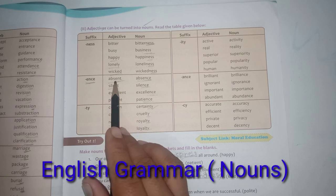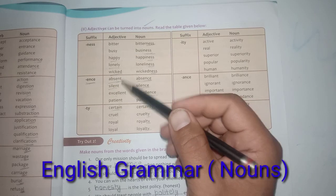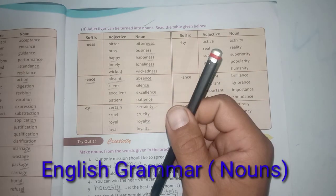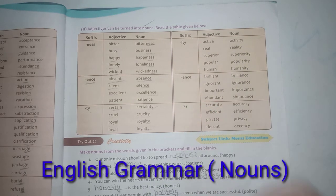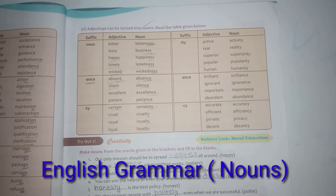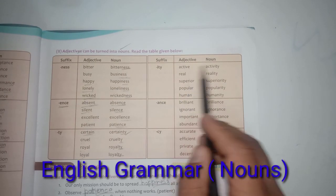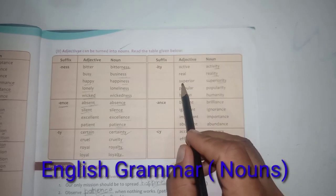For example, saying 'you are a very cruel person' — cruelty is the noun form showing that characteristic. Adding -ity: active → activity, real → reality, superior → superiority, popular → popularity, human → humanity.